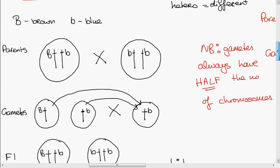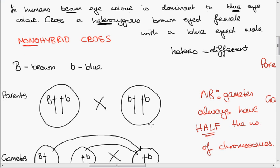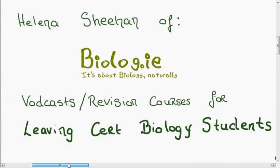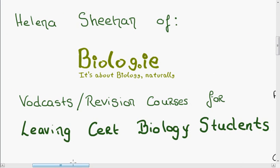So that is a monohybrid cross. We're looking at one trait, which was eye colour. And I'll do another vodcast soon, looking at two traits, a dihybrid cross.